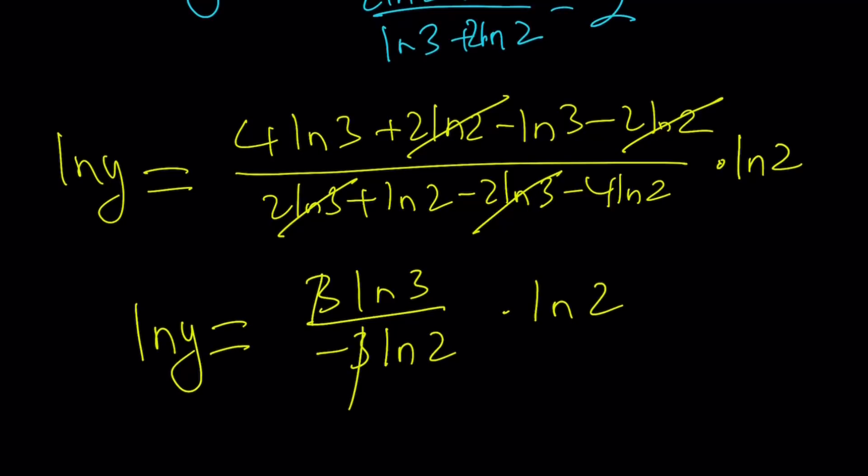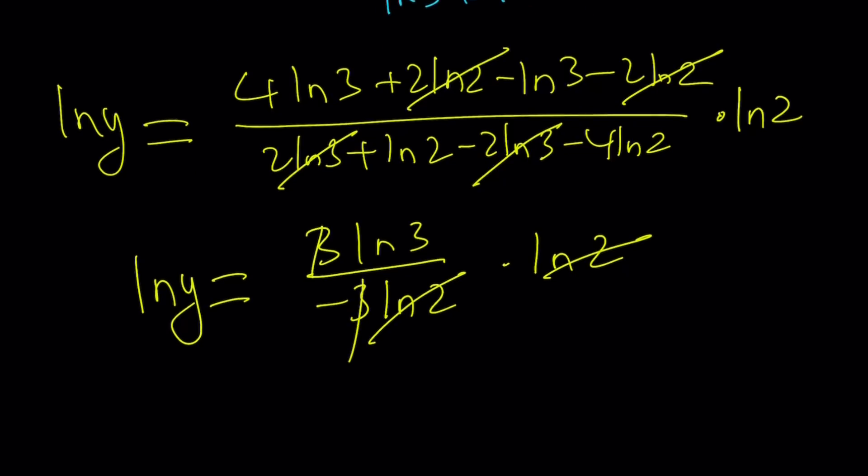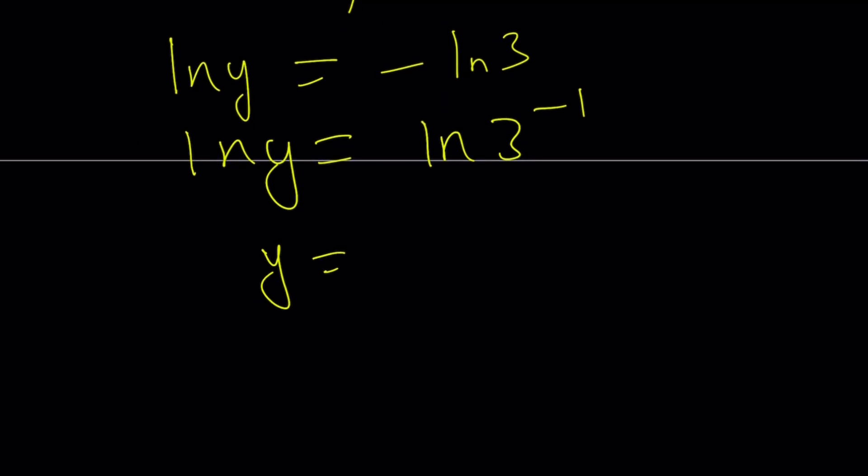3 cancels out, ln 2 cancels out, and we end up with the following. ln y equals negative ln 3, ln y equals ln 3 to the power negative 1, and y is equal to 3 to the power negative 1, which can be written as 1 third.